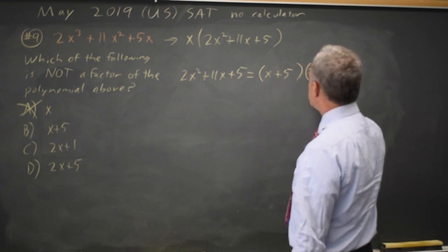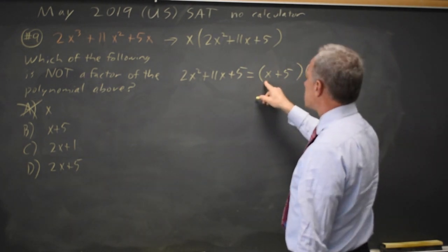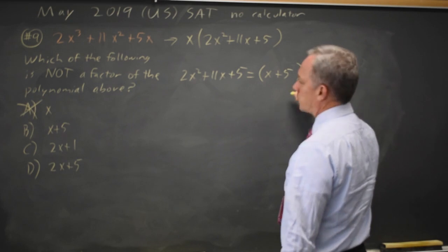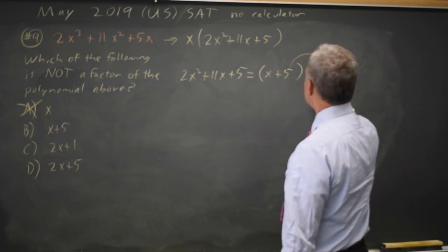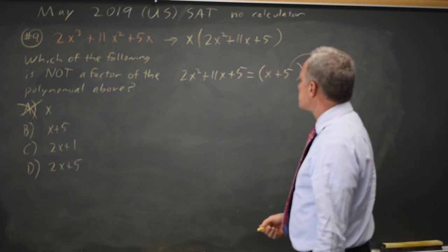The other one starts with 2x, and when I FOIL this, it has to end with plus 1, because 5 times 1 is 5, and let's check that.